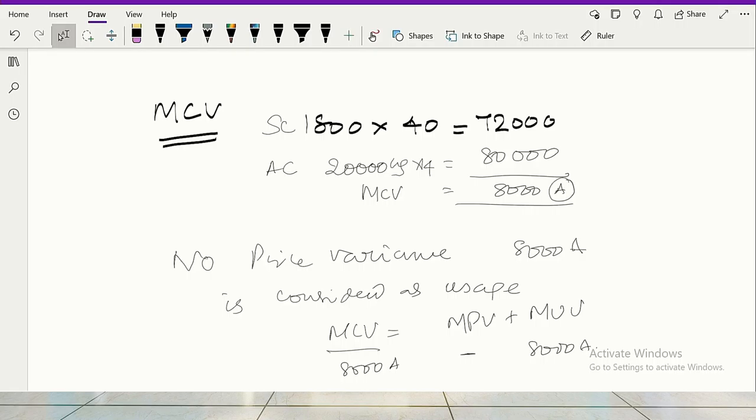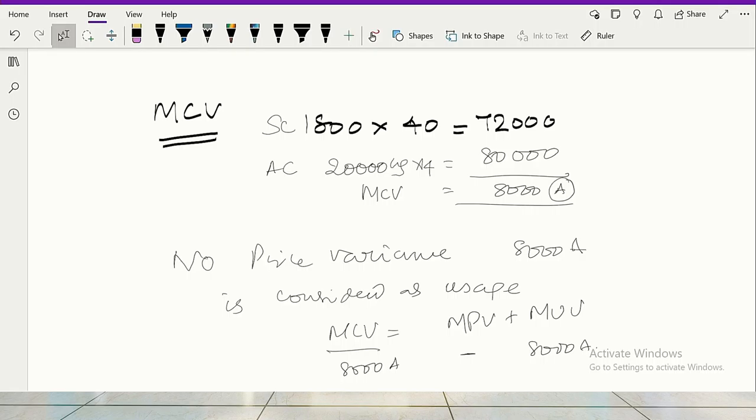You have produced 1800. So standard cost is for actual production. Standard cost is 1800 into 40, 72,000. You should have spent 72,000. But what you have spent is 80,000. Therefore, material cost variance is 8000 adverse. Since there is no price variance, then the cost variance becomes usage variance.